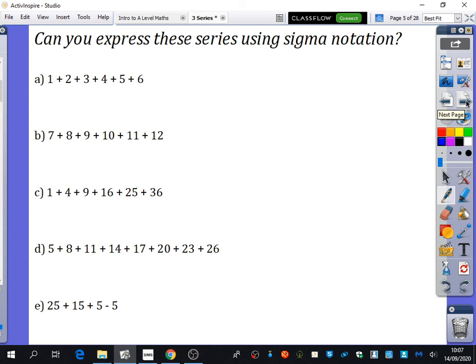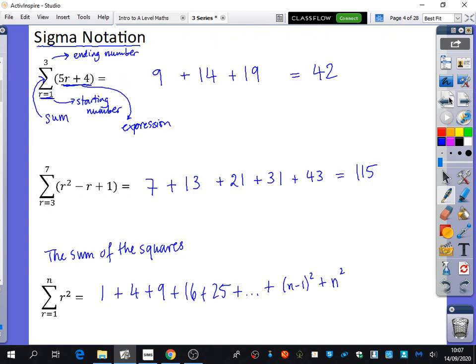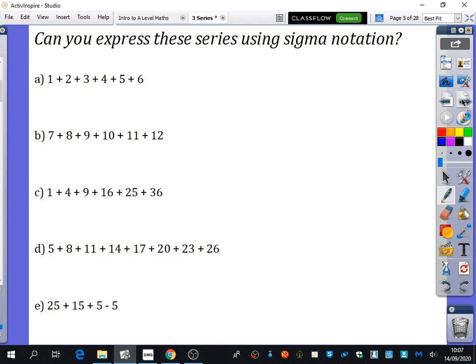So what I'd like you to have a go at now is exactly the reverse of what we did on this previous page. So here we took the sigma notation and we decided to write it down as numbers. This time what I've done is I've given you the numbers, and I want you to try and write it down using sigma notation, just so I can check that you've really understood what sigma notation actually means. You're going to need to have this symbol, a starting number, an ending number, and an expression. Please make sure your expression is bracketed.